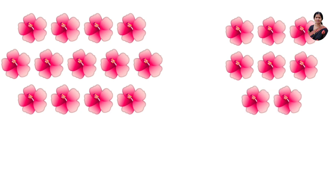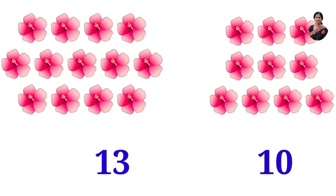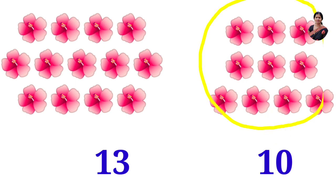One, two, three, four, five, six, seven, eight, nine, ten. Ten flowers. So which side is having less number of flowers? This side, with ten. So encircle the flowers having less number. Ten is less.